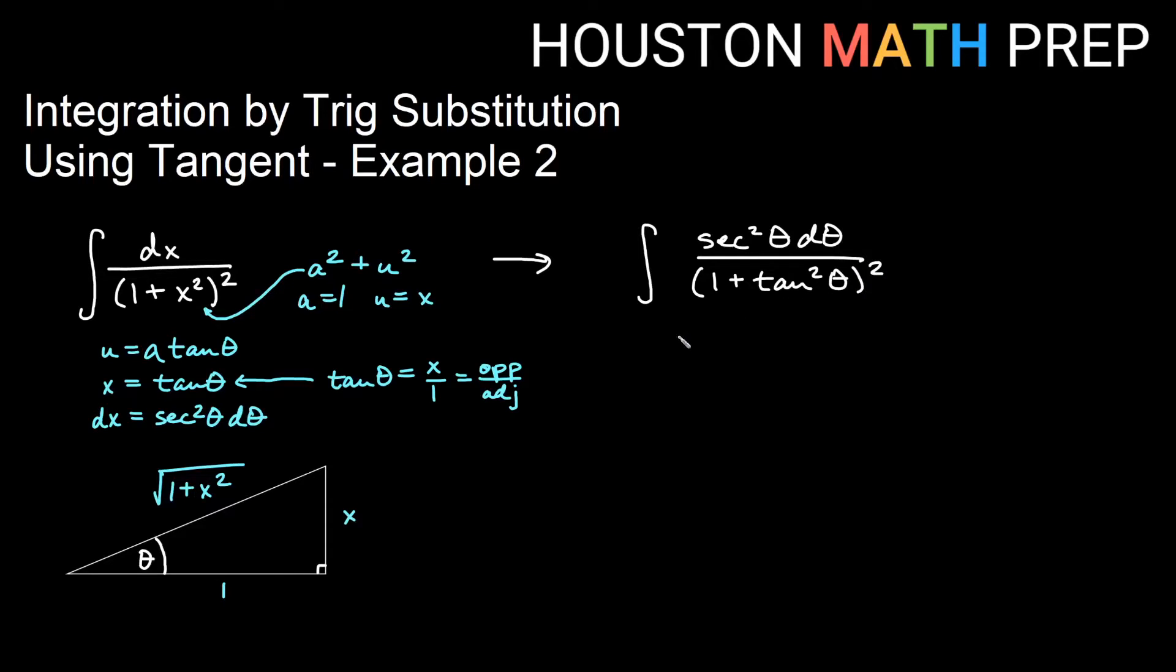We'll use our Pythagorean identity on the bottom that we have created. So we'll have sec²θ dθ over, changing 1 + tan²θ to sec²θ. But we have a square on the outside, so what we really have is sec²θ dθ over sec⁴θ. Okay, so if we reduce two copies from the top and the bottom, then that will just give us dθ on the top and sec²θ on the bottom.